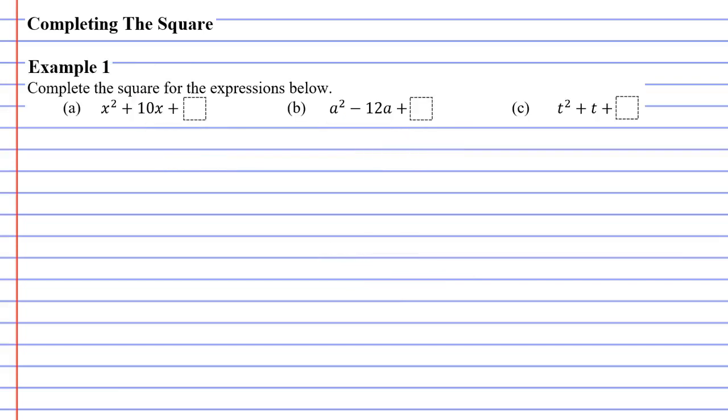Alright, let's get into our examples now. You'll notice for our examples, the last term has been blanked out. And they're asking us to complete the square. What does it mean to complete the square? Well, it means to turn the expression into a perfect square. And we're going to do that by putting the correct number at the end.